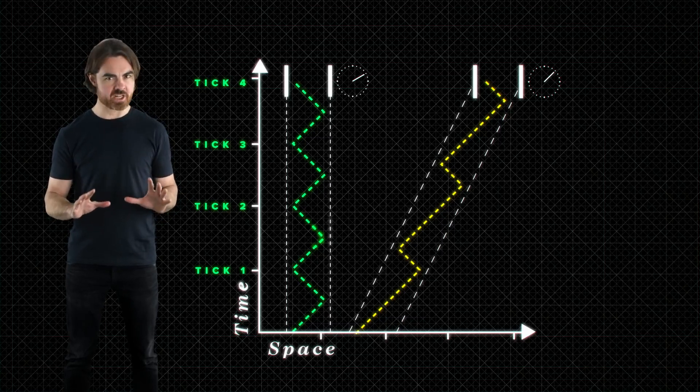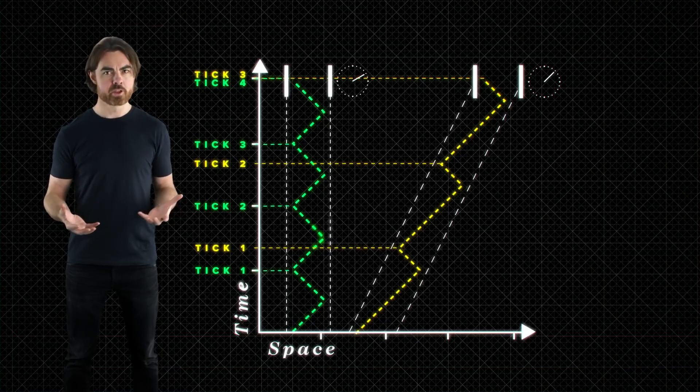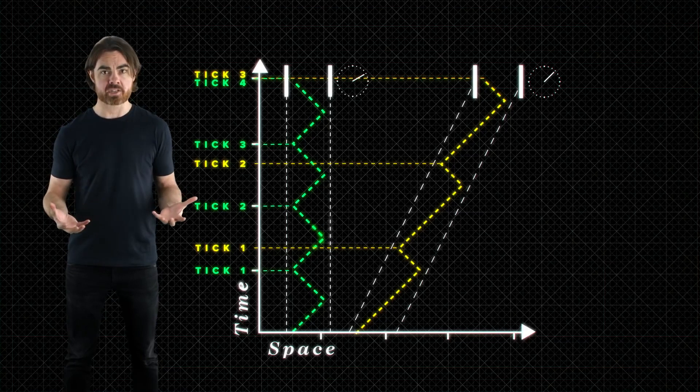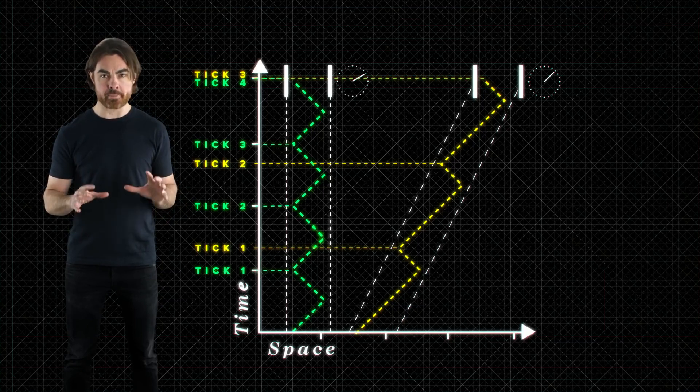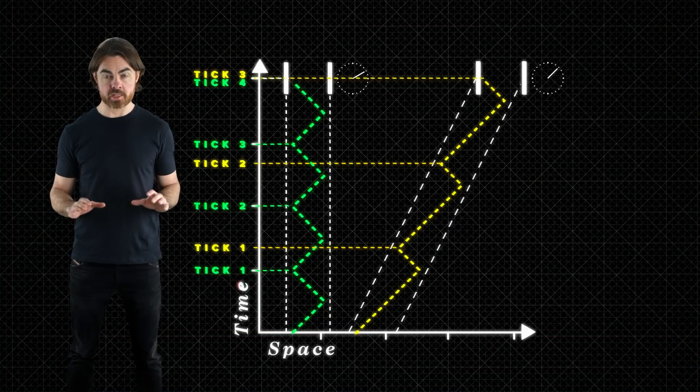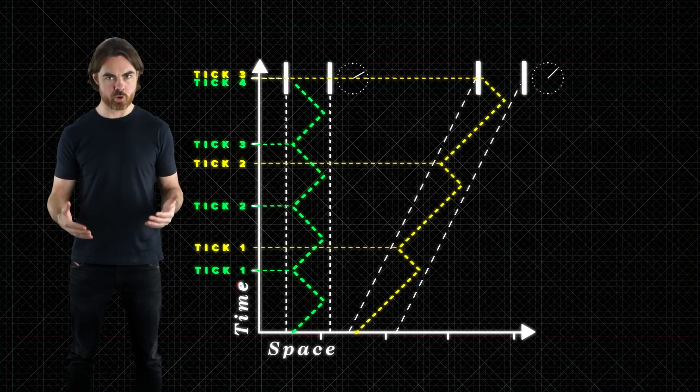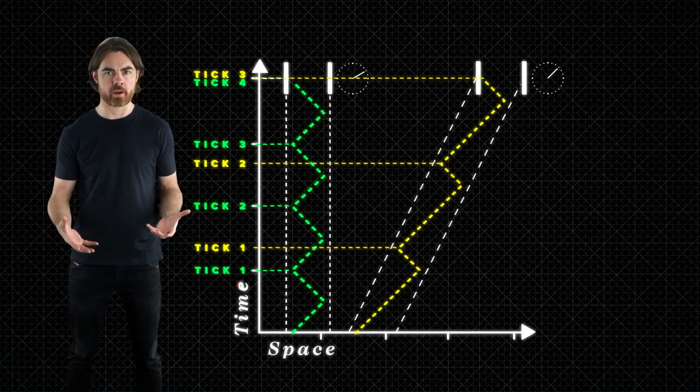On the timeline of the stationary clock, the ticks of the moving clock don't match up. The moving clock appears to tick at a slower rate. This is the same result that we saw in the episode on time dilation. And besides the invariance of the speed of light, the other fundamental principle of Einstein's special relativity at play here is the Galilean relativity of motion. There's no preferred inertial or non-accelerating reference frame.